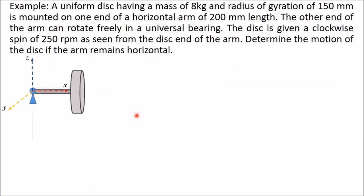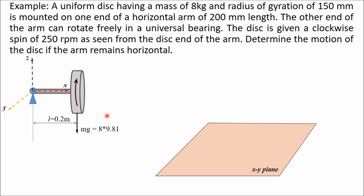Numerical example: a uniform disc of mass 8 kg and radius of gyration 150 mm is mounted on one end of a horizontal arm of 200 mm length. The other end rotates freely in a universal bearing. The disc is given a clockwise spin of 250 rpm as seen from the disc end. Determine the motion of the disc if the arm remains horizontal. When viewed from the disc end, the disc rotates clockwise, so by the right-hand screw rule the angular momentum vector points forward.